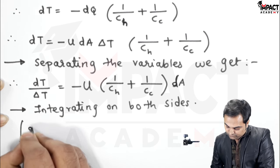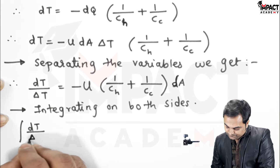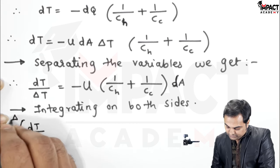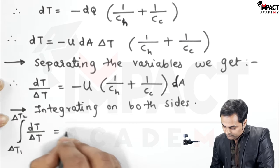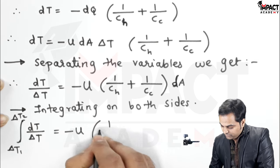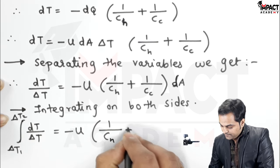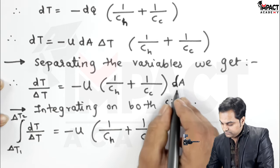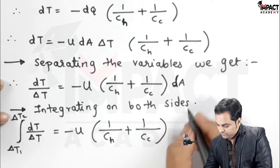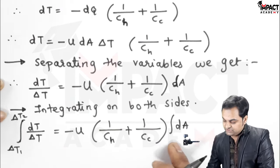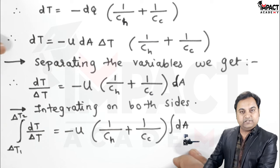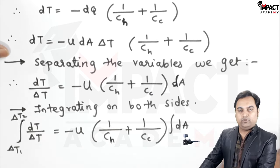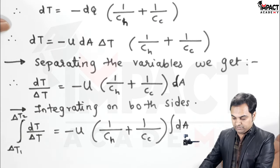Integrating: the integral of (1 upon delta T) dT with limits delta T1 to delta T2 equals minus U into (1 upon CH plus 1 upon CC) into the integral of DA. The integration of DA gives capital A, and the left side gives ln of delta T. Putting the limits: ln(delta T2 upon delta T1) equals minus U·A into (1 upon CH plus 1 upon CC).